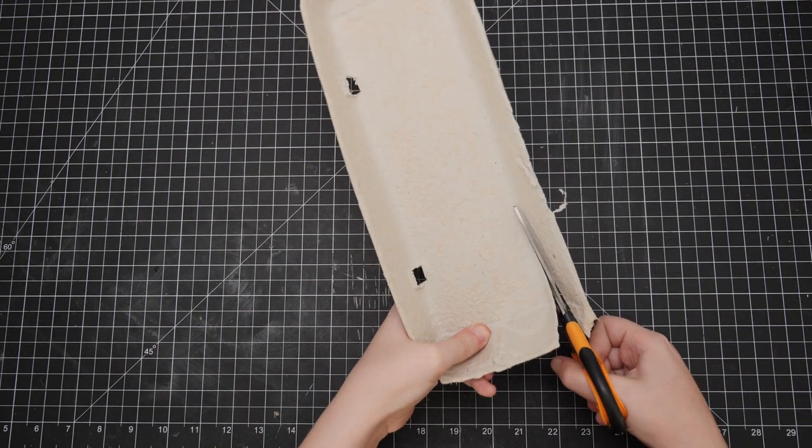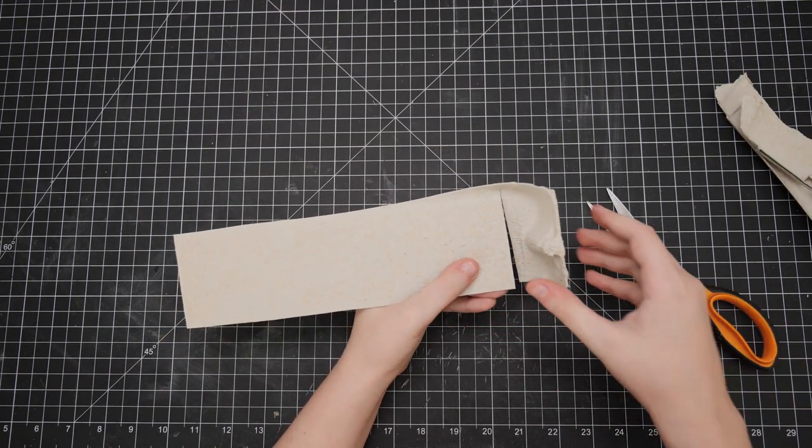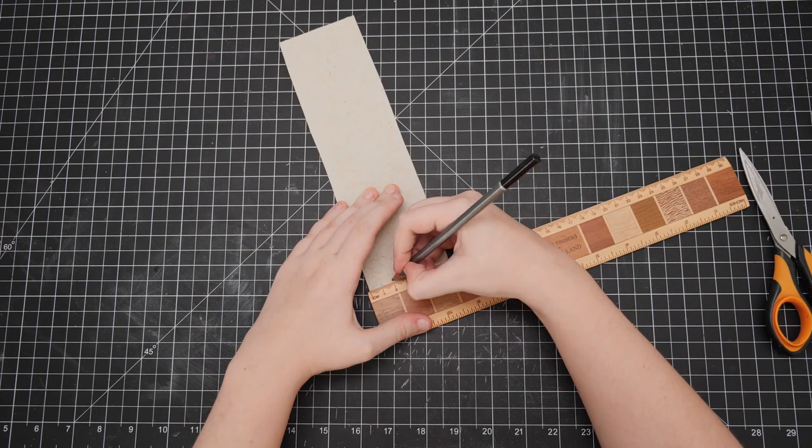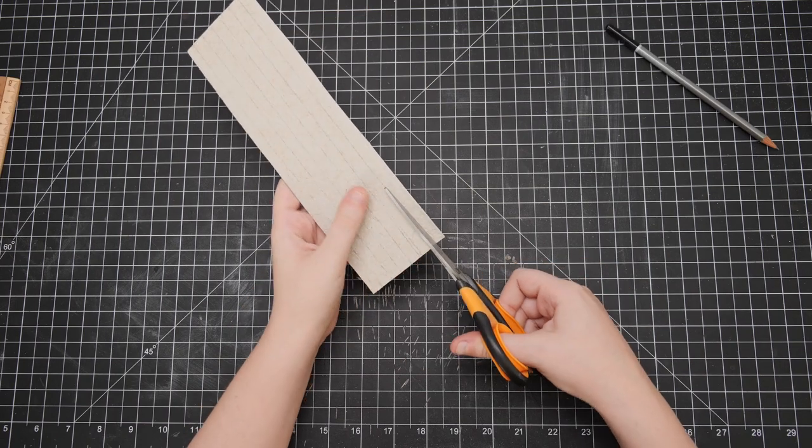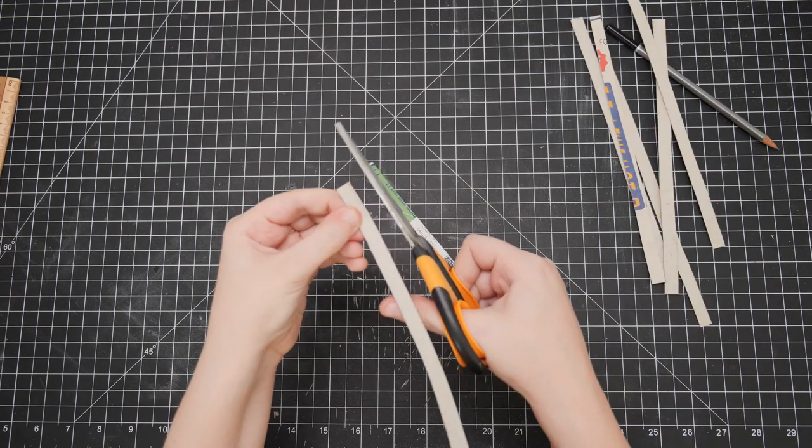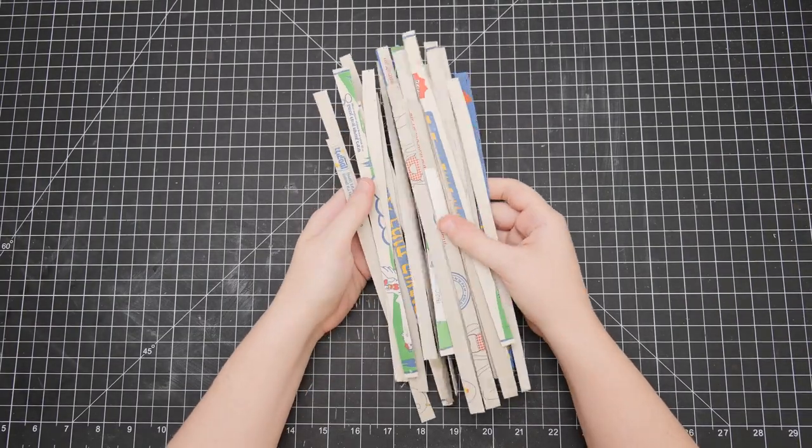First off, we're going to start by cutting the egg packaging into our preferred brick size. I went with 1x2 cm size because I wanted this build to be rather quick, but of course the smaller you'd make them the better it will look. It's just a compromise with how much time you want to put in.